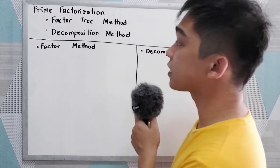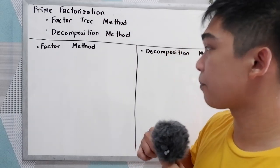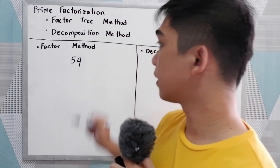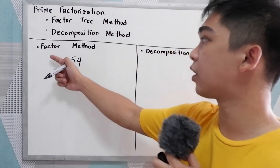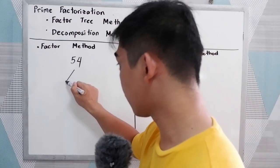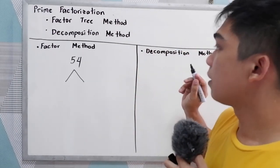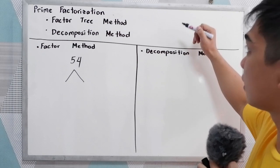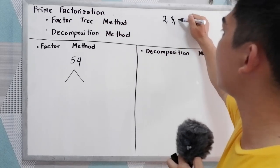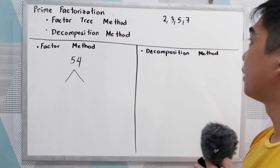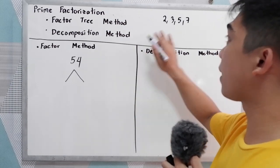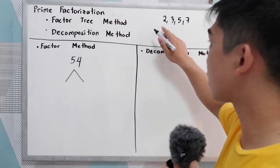So what are the differences between the two? Let's try our first example. Let's say we have the number 54. Get all the prime factors of 54 using the decomposition method and the factor tree method. Before doing that, let's list all the prime numbers between 1 to 10. We have 2, 3, 5, and 7. The shortcut here is to check if the number is divisible by the smallest prime number, which is 2.